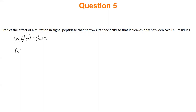The other option is that nothing happens — even though you have those extra amino acids, the protein can still fold just fine and having them doesn't cause any harm. So those are the two possible outcomes: one, it totally messes up folding; two, it doesn't do anything at all. You don't actually know which until it happens.